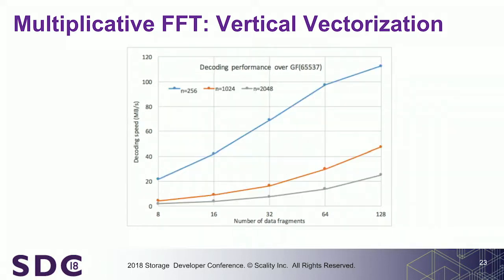In terms of decoding, we are not that good yet — for now decoding uses a slow Lagrange interpolation. We are working with researchers to optimize it, but we are in the range of about 100 megabytes per second. We can do both systematic and non-systematic. We measured the non-systematic, and the systematic is a bit slower for encoding — but obviously if you have nothing to decode, you have nothing to do.